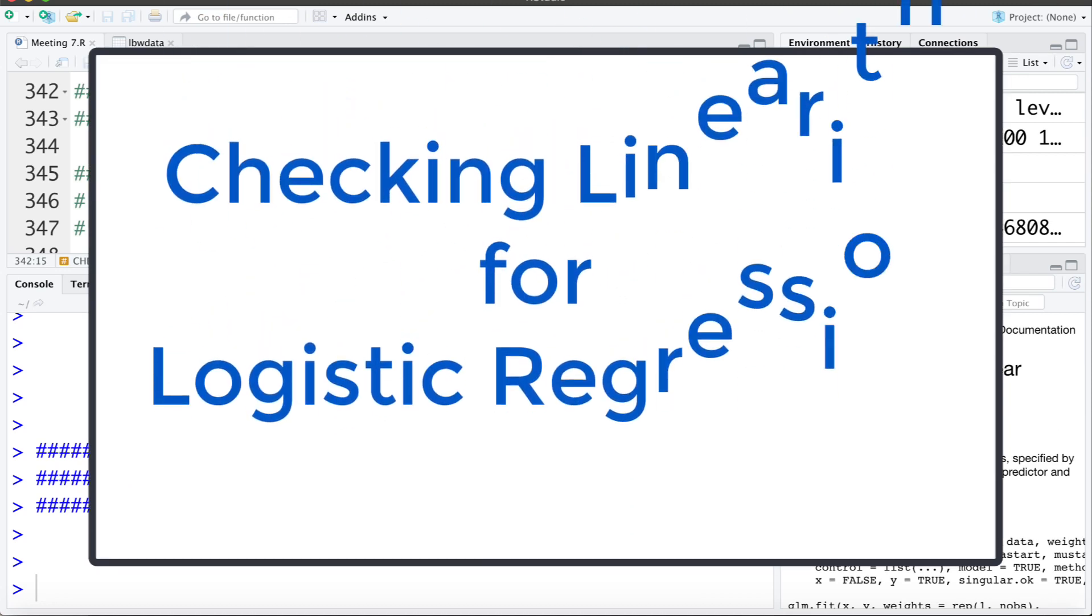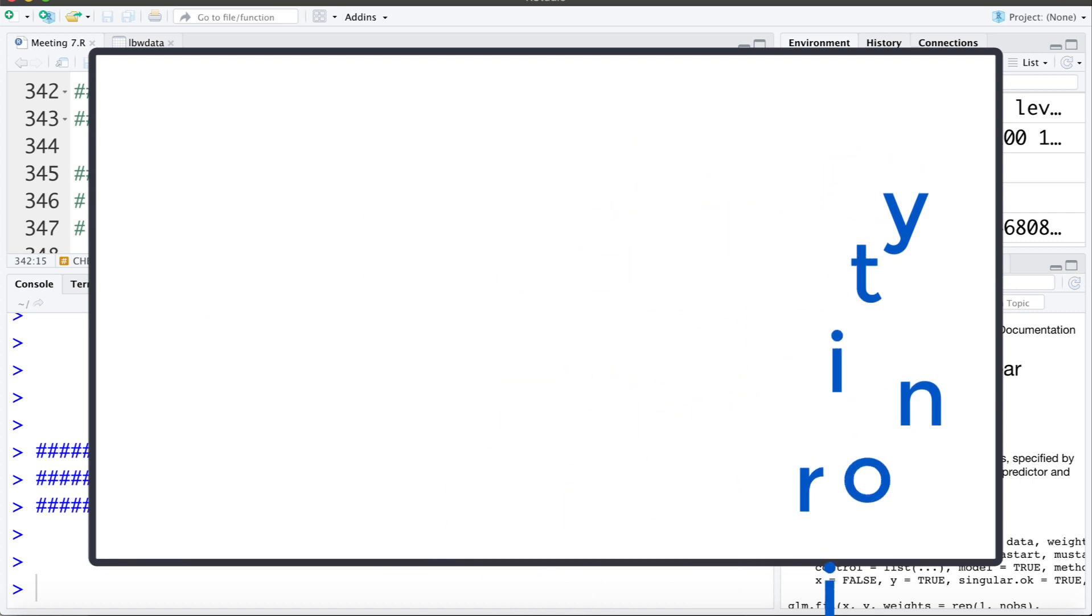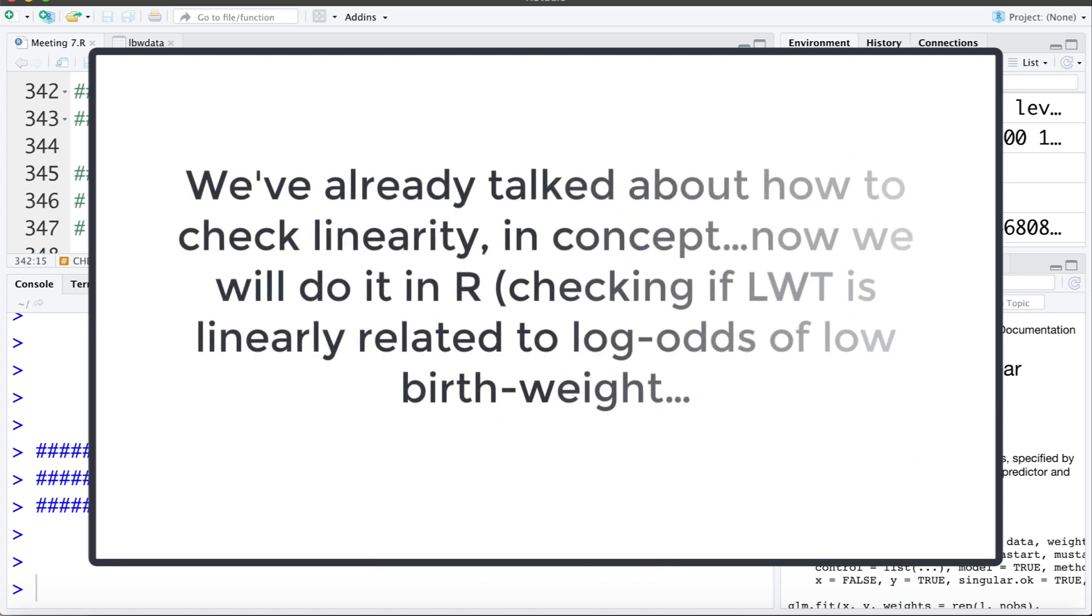In this video we're going to talk about checking the linearity assumption for logistic regression. In a separate video we talked about how we can check linearity conceptually. In this video we're going to examine doing it in R on the low birth weight dataset.